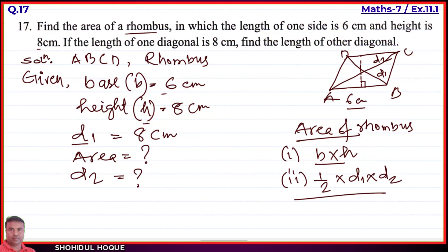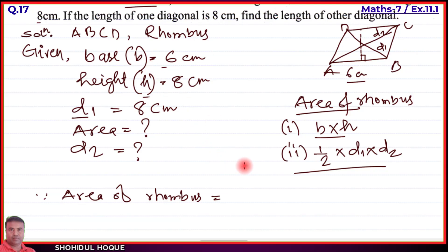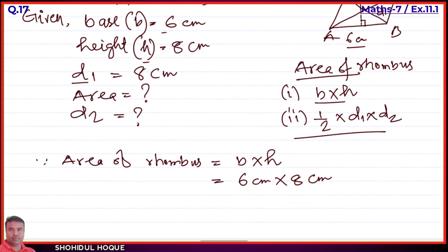Applying the formula: Since base and height are given, first write — Area of rhombus = base × height, where b is base and h is height. So base equals 6 centimeters and height equals 8 centimeters. Therefore Area = 6 × 8 = 48 square centimeters.